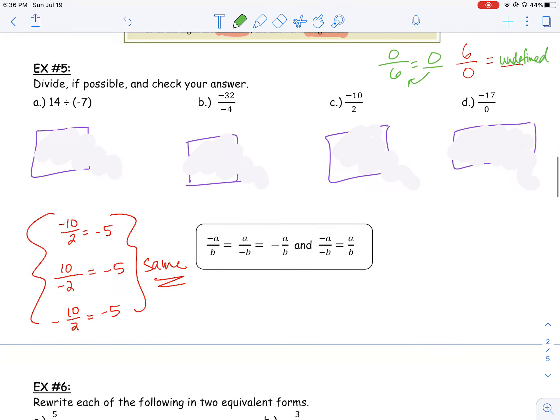All right, so let's do a few examples of division. Example number 5 asks us to divide and if possible check our answers. So I have 14, positive 14, divided by negative 7. I have a positive divided by a negative. My signs are opposite, so I know my answer is going to be negative. I want 14 divided by 7. How many times does 7 go into 14? You should end up getting negative 2.